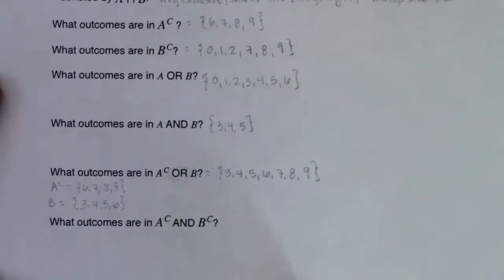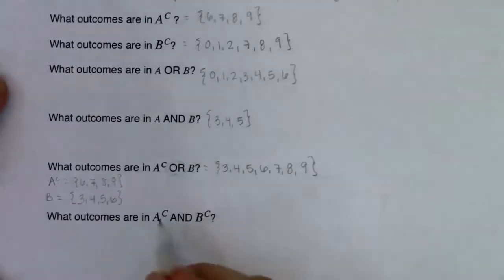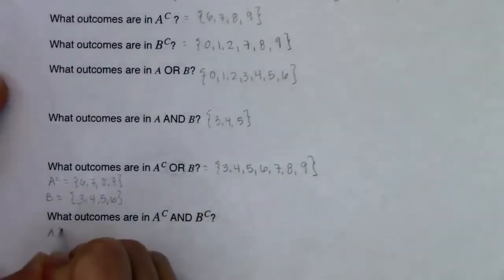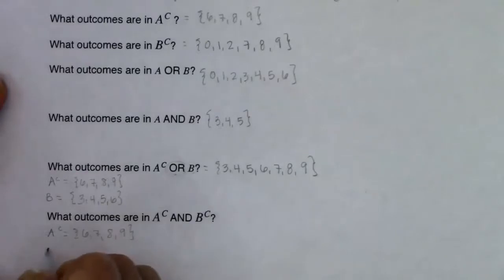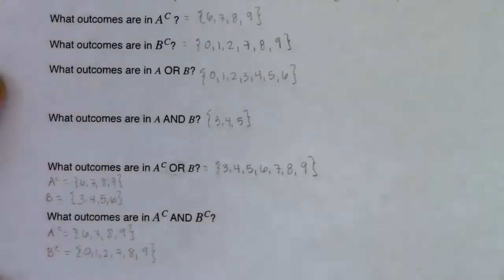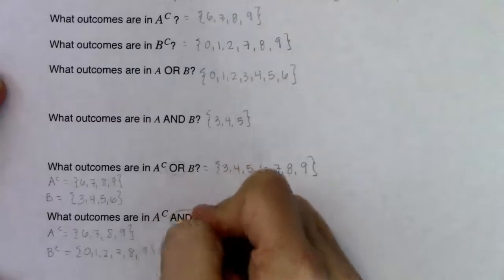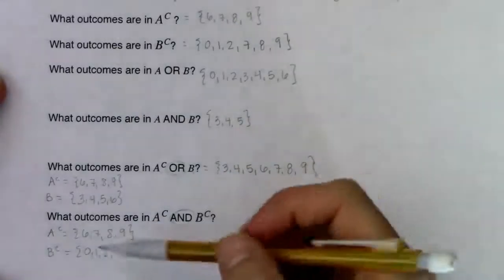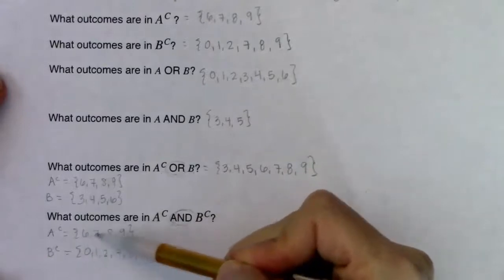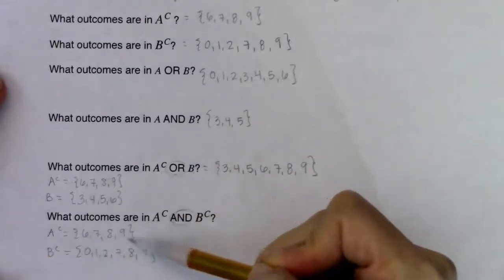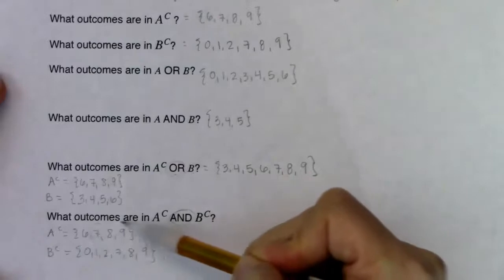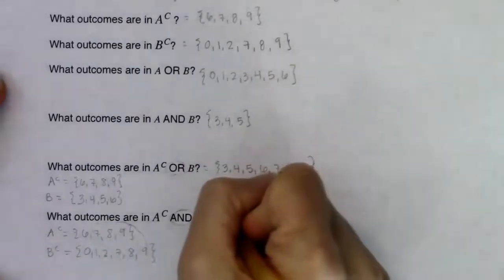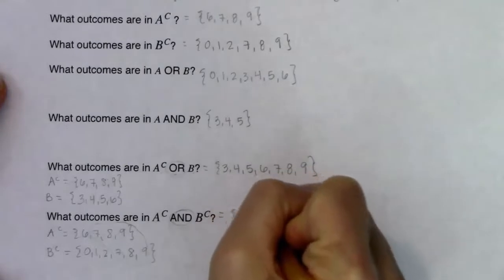For A complement AND B complement: A complement is {6,7,8,9} and B complement is {0,1,2,7,8,9}. Seeing the word AND, I look for the overlap. Six was not in both, seven was in both, eight was in both, nine was in both. So A complement and B complement is {7, 8, 9}.